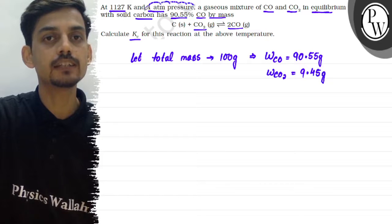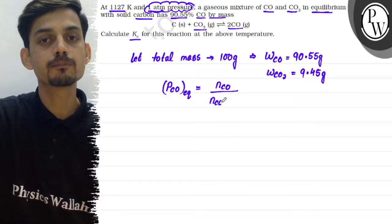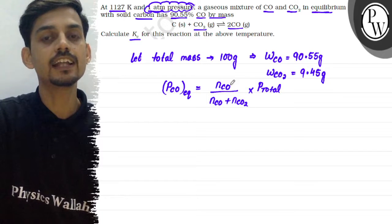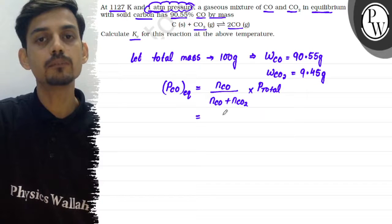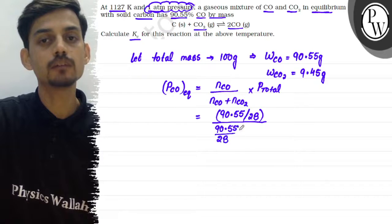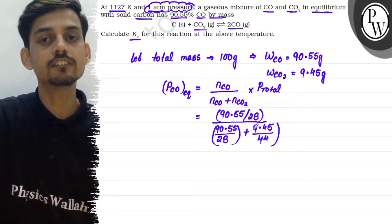Now we calculate the partial pressure of each gas. The partial pressure of CO gas can be written using Dalton's law: moles of CO divided by total moles, multiplied by total pressure at equilibrium. The moles of CO is 90.55 divided by 28 (molar mass of CO), and total moles equals 90.55/28 plus 9.45/44 (molar mass of CO₂).